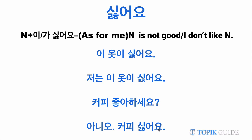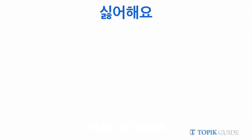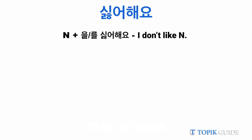Now let's see how to use shiroheyo. Because shiroheyo is a verb, we will use object particles il or rul with the noun that comes before it — not ii or ga. So let's see some examples. If you want to say that you don't like the dress, you will have to say 'ee osu' — not 'ee oshi.'